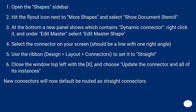Use the ribbon: Design > Layout > Connectors, to set it to straight. Close the window from the top left with the X, and choose to update the connector in all of its instances. New connectors will now default to being routed as straight connectors.